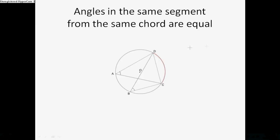Angles in the same segment from the same chord are equal. DC being the chord, AB being the angle. They will be equal because they are from the same chord, DC.